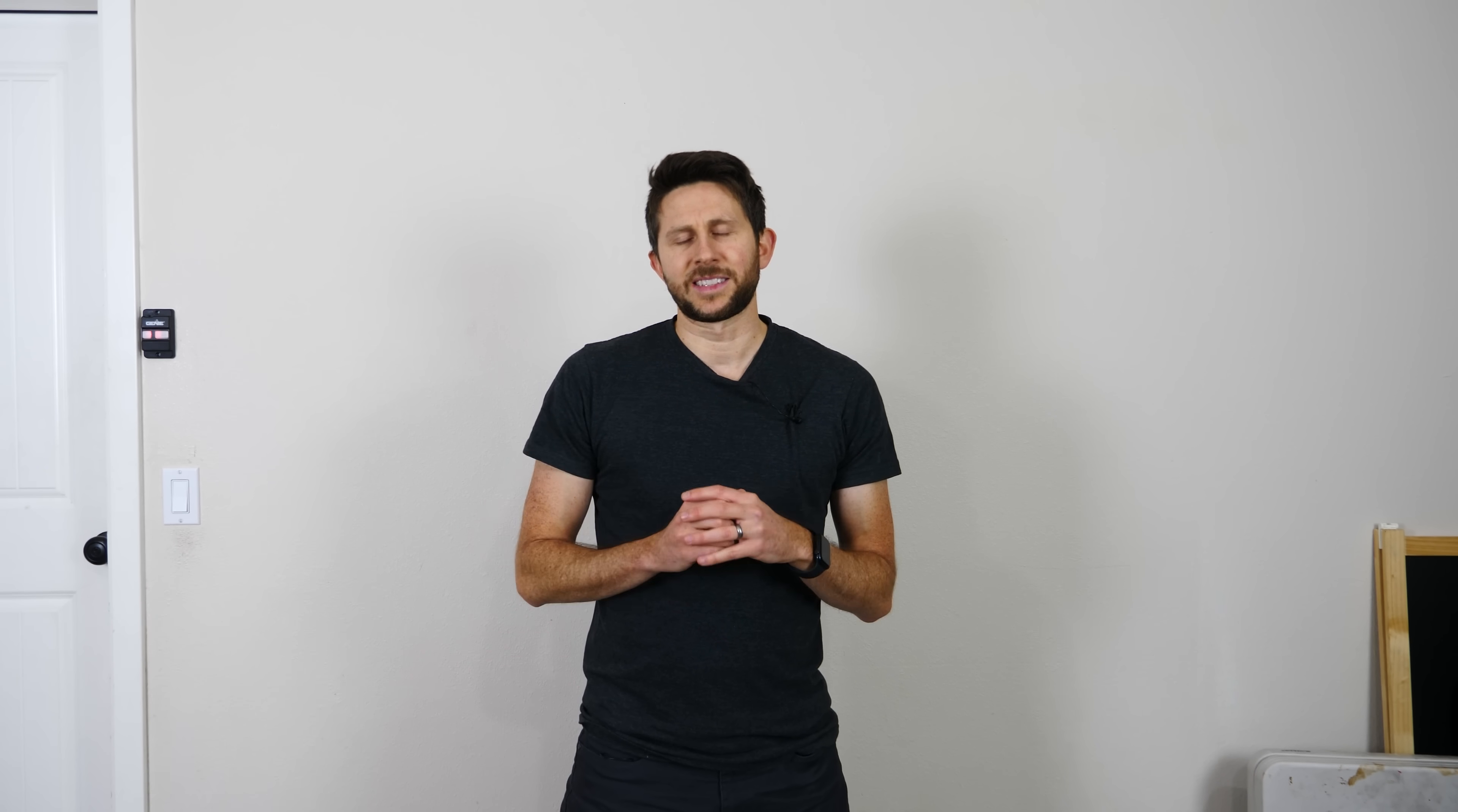Now what's really cool about this is this experiment is comparable to something called a Paul trap where you can trap ions. So in a Paul trap instead of having this gravitational quadrupole what you have is an electric quadrupole potential. And you can actually trap charged ions in the center just like we trap in this gravitational well.